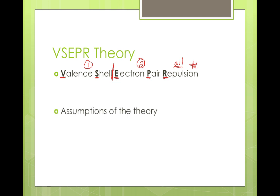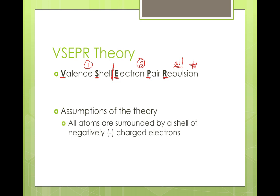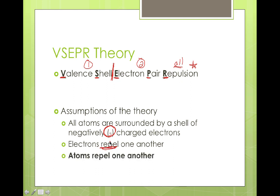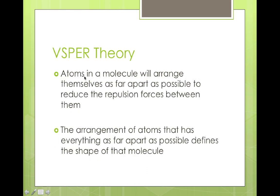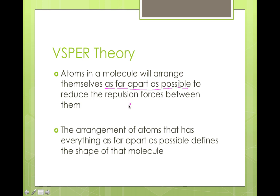Let's talk about the major assumptions of the theory. First, all atoms are surrounded by a shell of negatively charged electrons. All those like-charged electrons repel one another — they push apart. If atoms are surrounded by electrons and the electrons repel one another, the atoms in the compound are also going to repel each other. Therefore, the atoms in a molecule will arrange themselves as far apart as possible in order to minimize repulsion forces, and that arrangement defines the actual shape of the molecule.